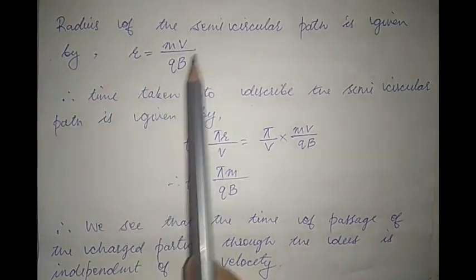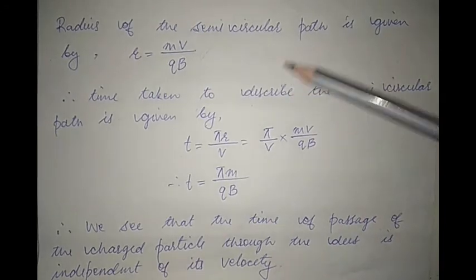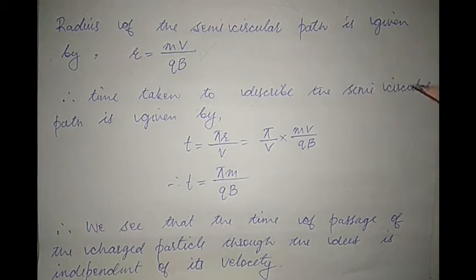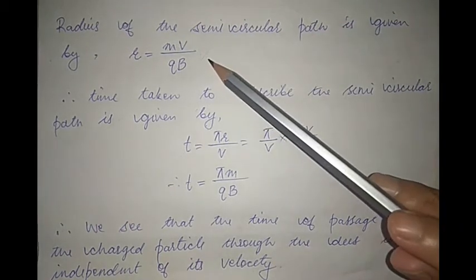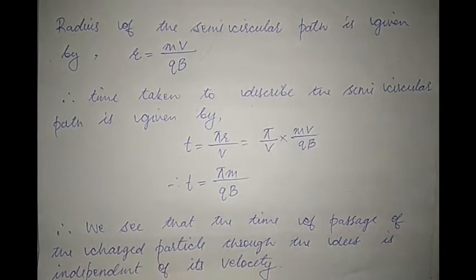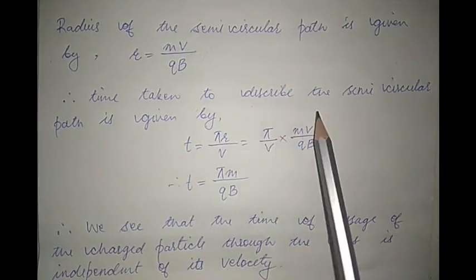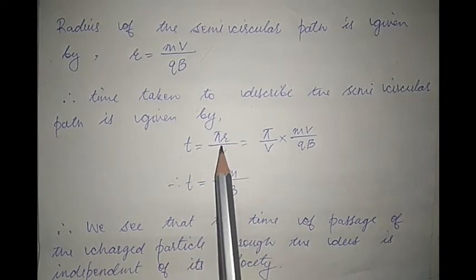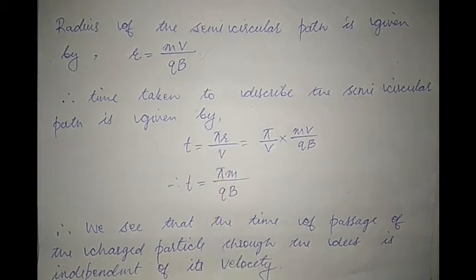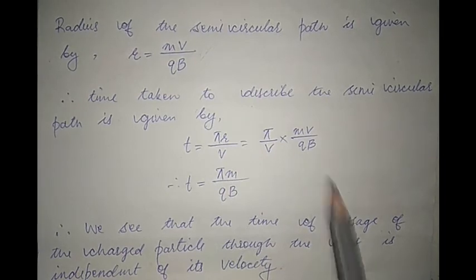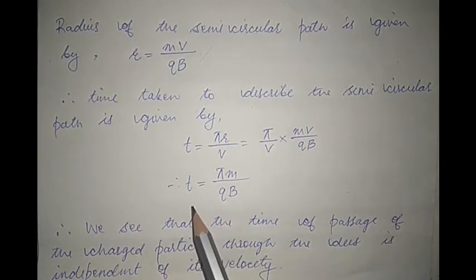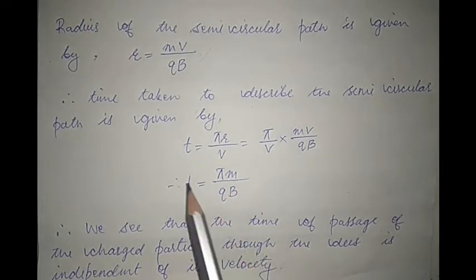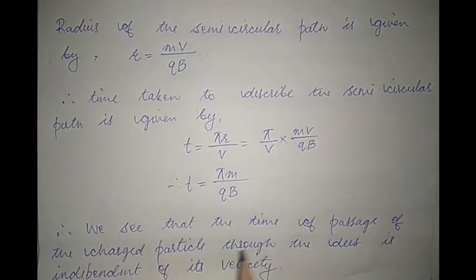The radius of the semicircular path described by the charged particle inside the D's is given by R = mv / qB, which we derived in a previous video. The time taken to describe the semicircular path is T = πR / v = π/v × (mv/qB) = πm / qB. So the time taken to describe the semicircular path is independent of the velocity of the charged particle.